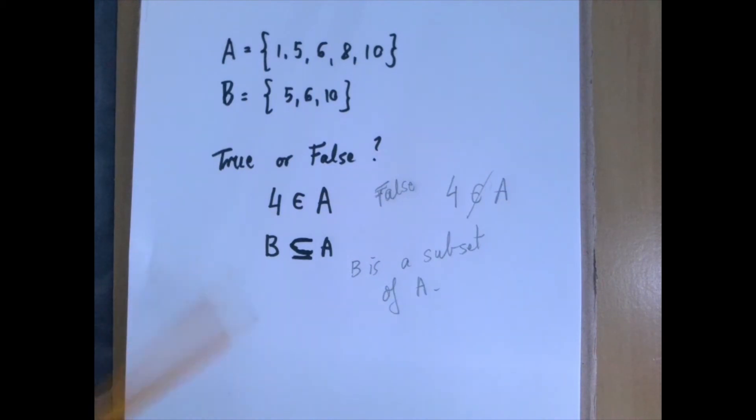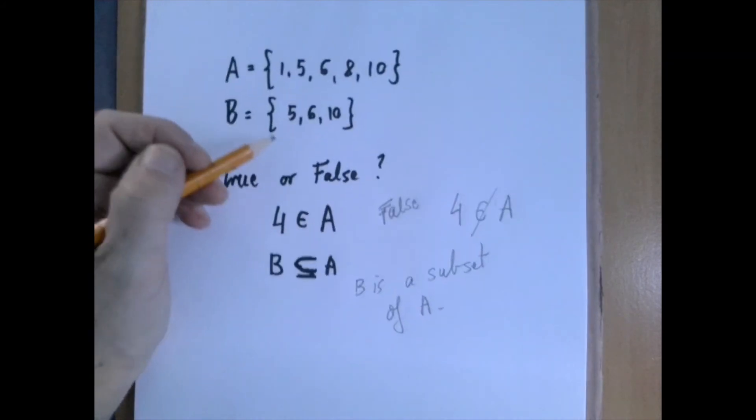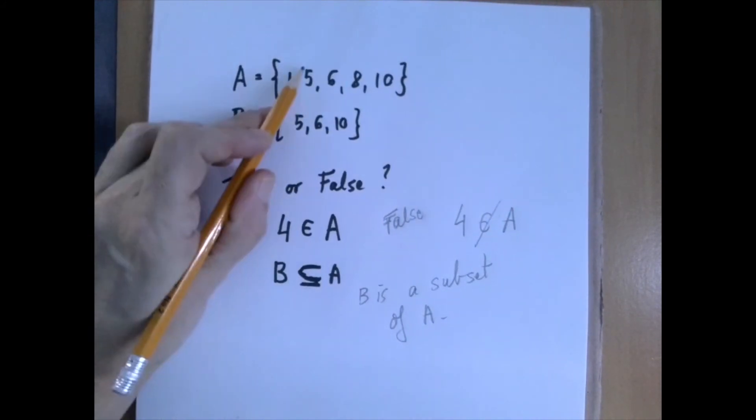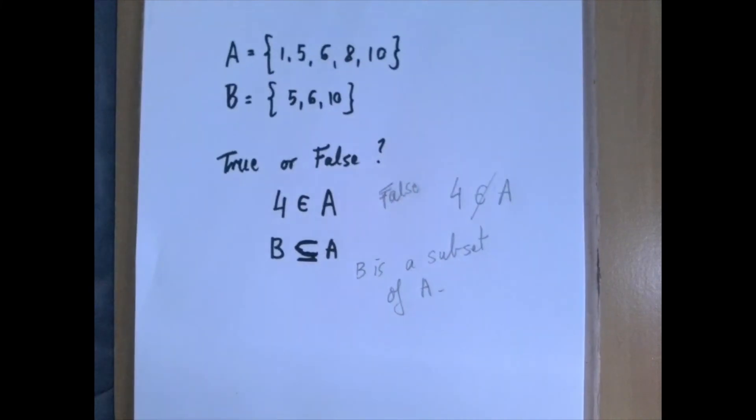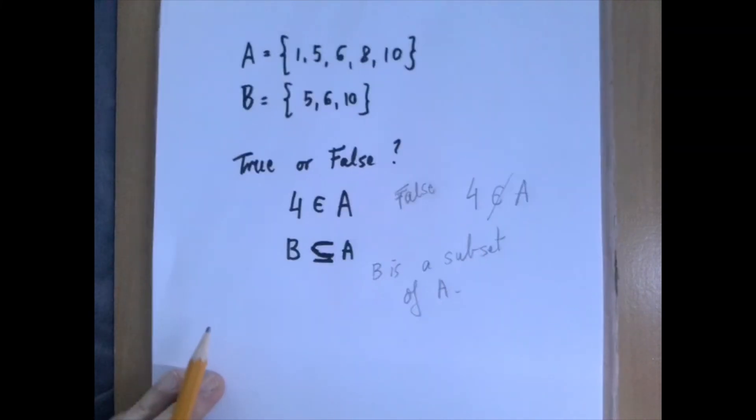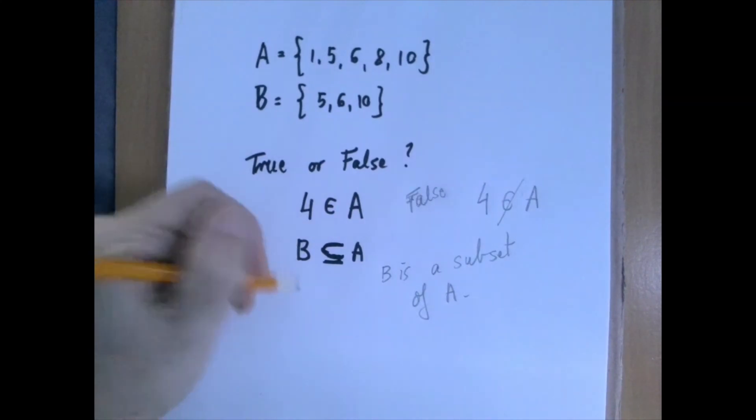That means everything that's in B is also in A. If we look at all the elements of B: 5, that's in A; 6, that's in A; 10, that's in A. Therefore, B is indeed a subset of A, which makes this second statement true.